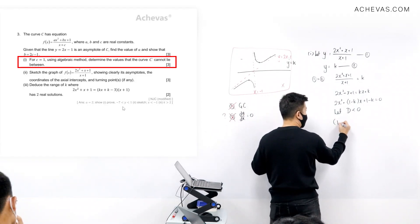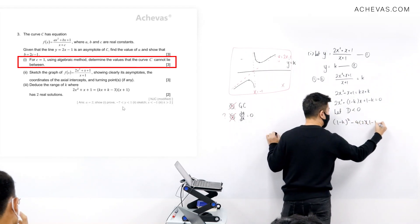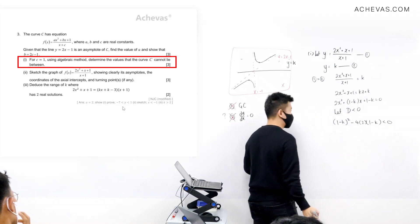Because I want this horizontal line to be floating in a region where the curve cannot lie between. So based on this, we have (1 minus k) squared, b squared minus 4ac, less than 0.